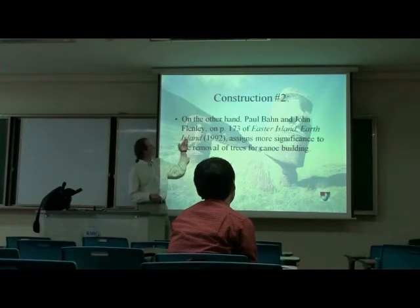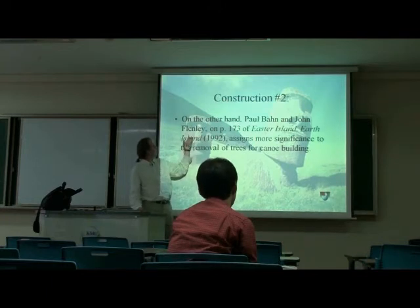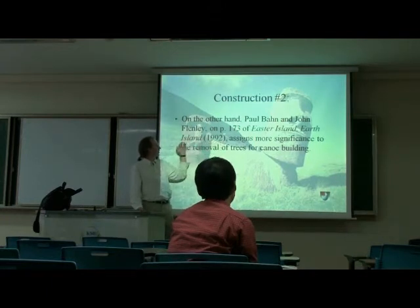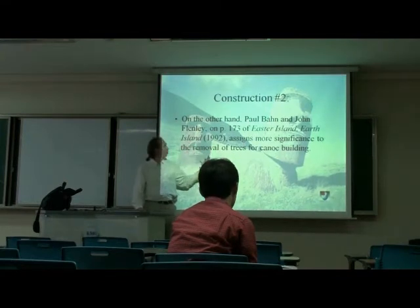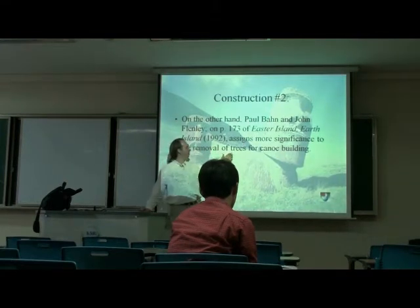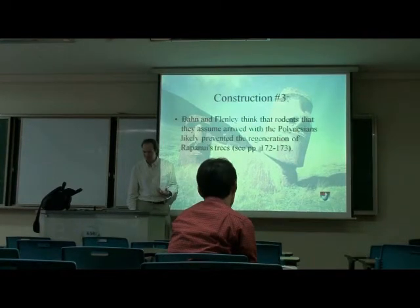Another construct — number two. Paul Bahn and John Flenley, in another book called Easter Island, Earth Island, said they were destroying the trees for canoe building. So this is a different construct of why the deforestation happened.